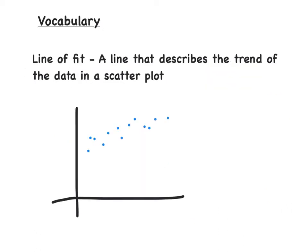For our last bit of vocabulary, we are going to be talking about the line of fit. Basically what that is, is the line that describes the trend of the data in the scatter plot. So, we have our data.